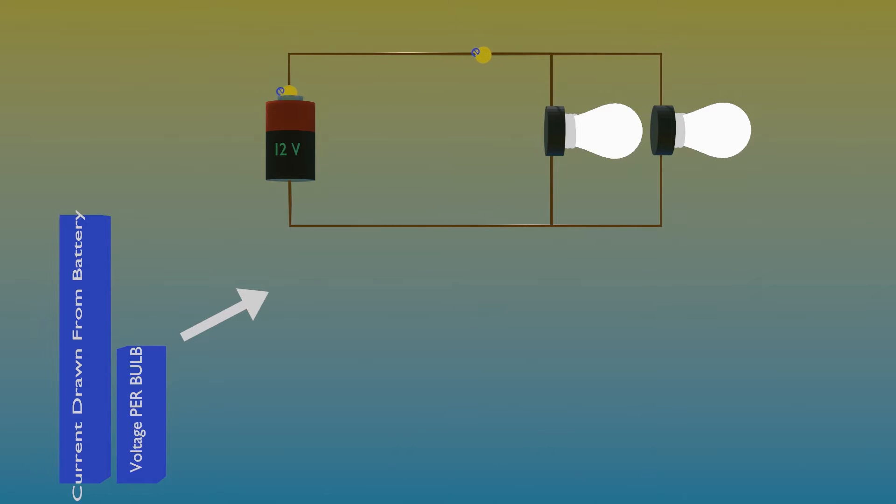The full voltage of the battery on each bulb pushes as much current through each branch of the circuit as if the bulb were connected to the battery by itself, so both bulbs shine with the same brightness as a single bulb connected to the battery.